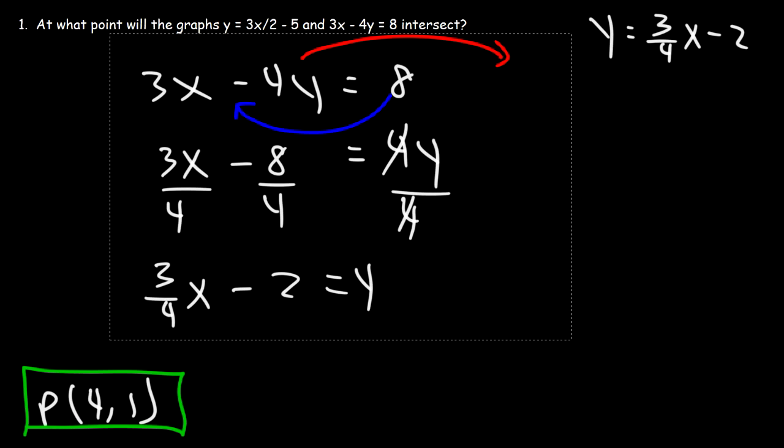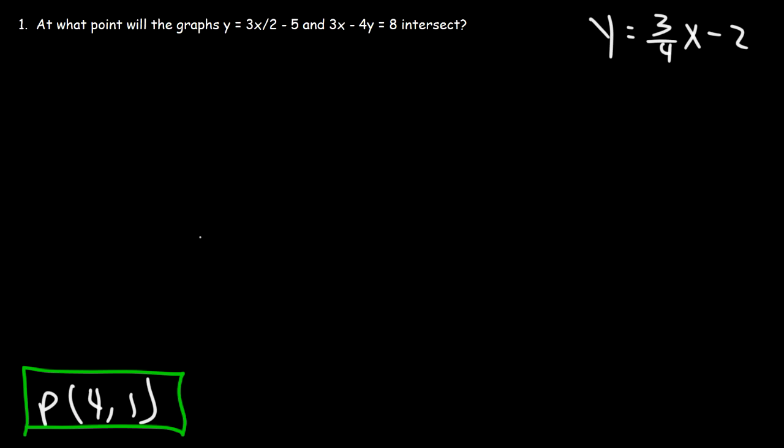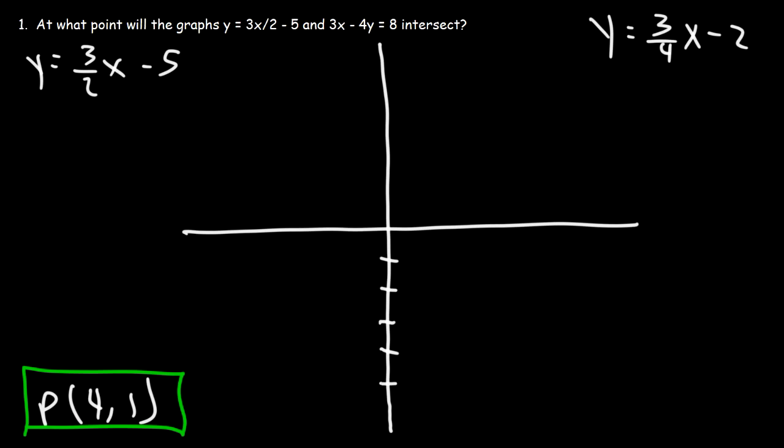It's very straightforward graphing a linear equation that's in slope-intercept form. And so that's why I wanted to put it in that format. So let's begin by plotting this one. So let's start with the y-intercept. The y-intercept is negative 5. So the first point is going to be 0, negative 5. Now we're going to use the slope to get the next point. So we're going to go up 3 units over 2. So that will give us this point here.